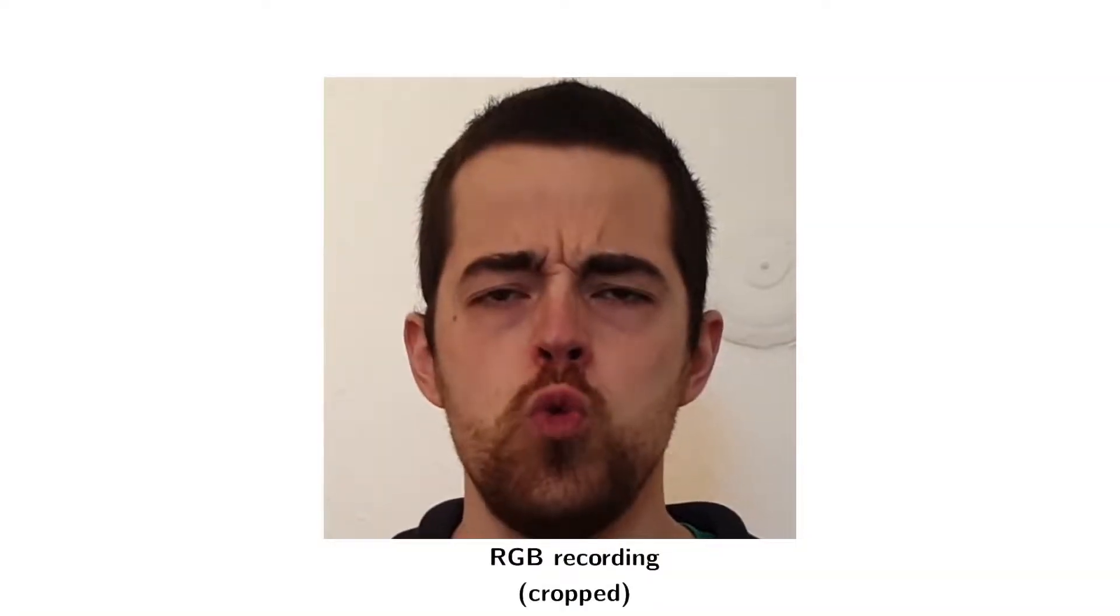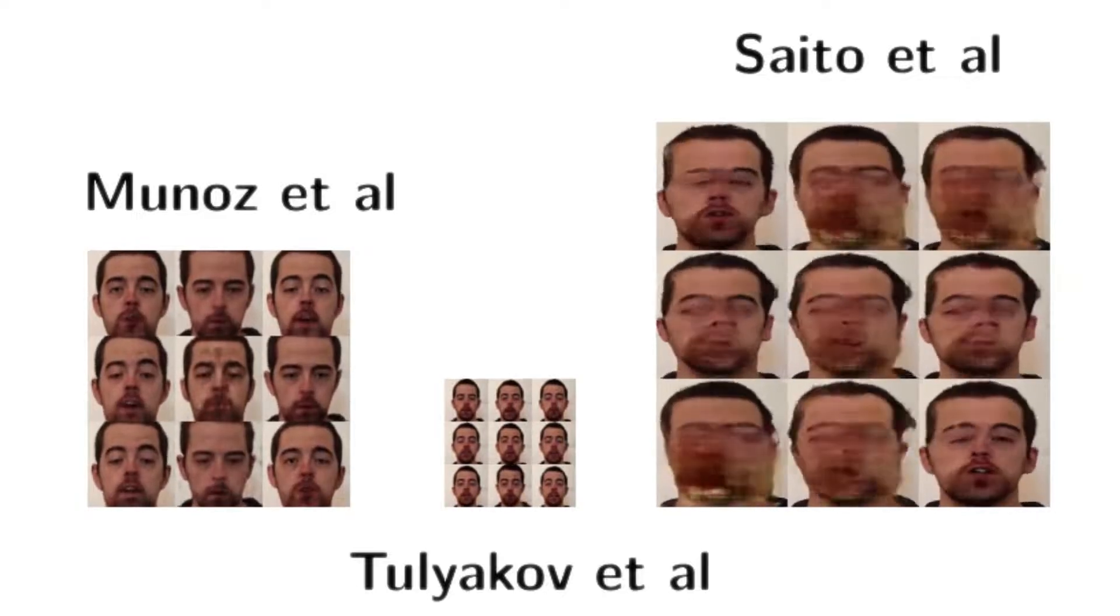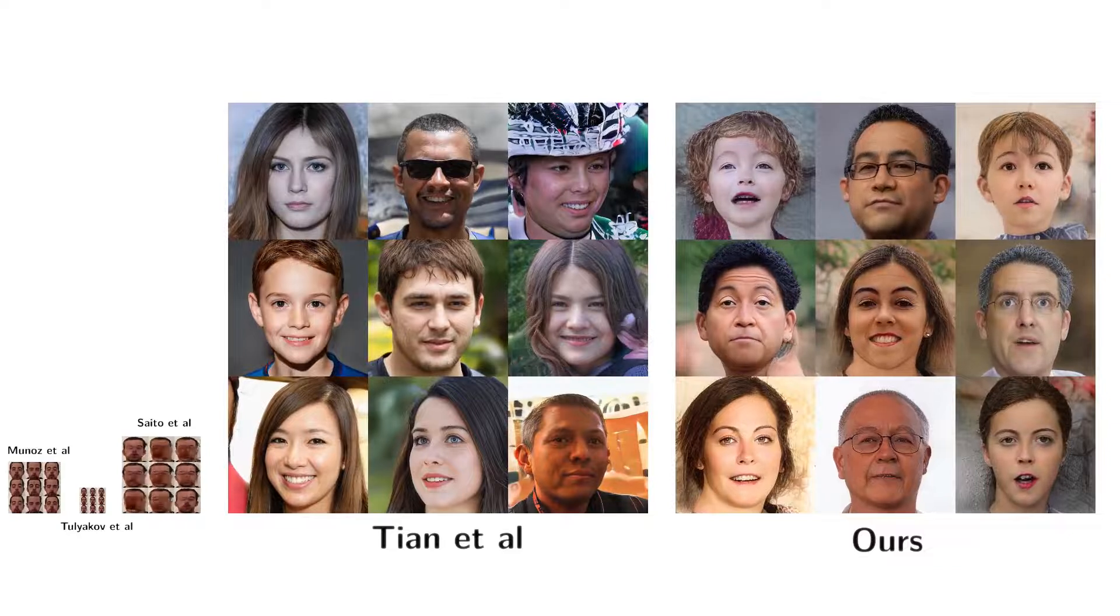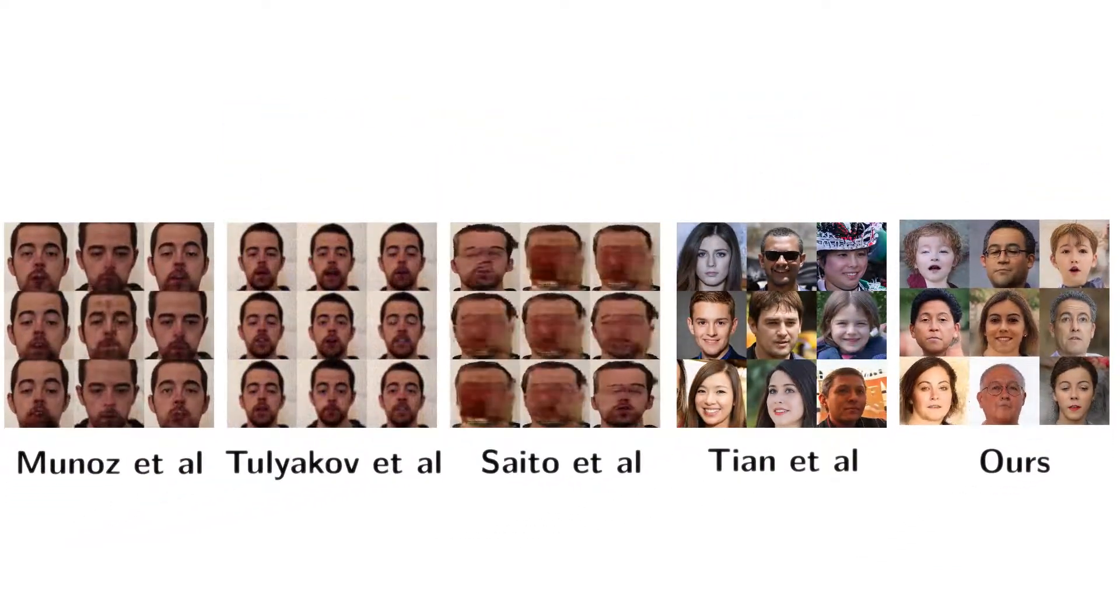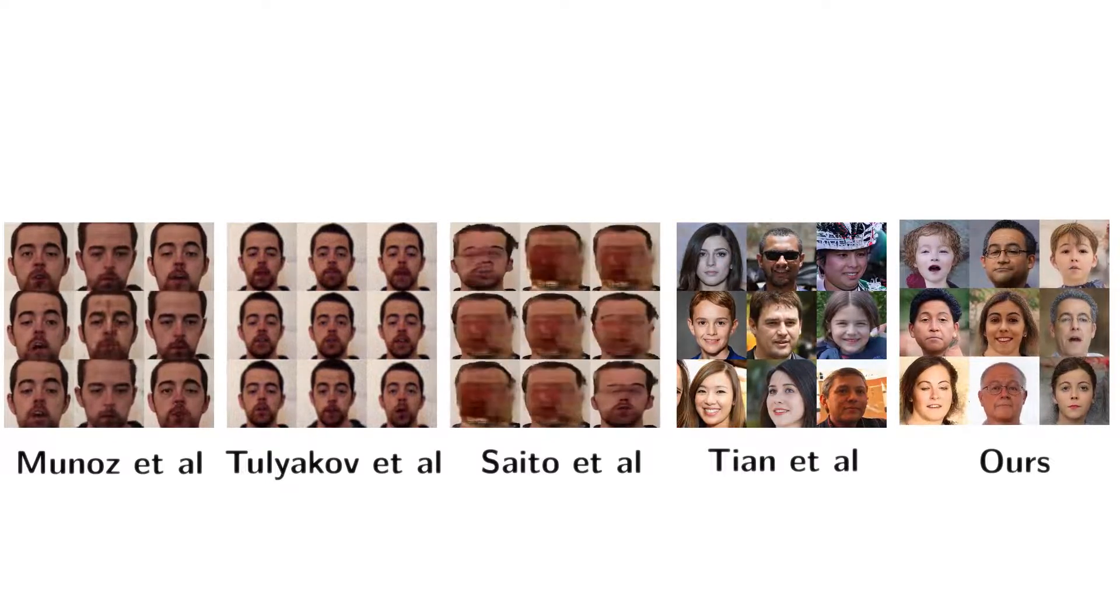Now that we have motivated all the components of our full technique, let's compare to some previous methods. For this comparison, all methods were trained on the same training video. The first difference we notice is that, except for Tian et al., no previous method is able to generate even remotely the resolution that ours produces. Also, with the exception of Tian et al., previous methods are unable to generalize to unseen random identities.